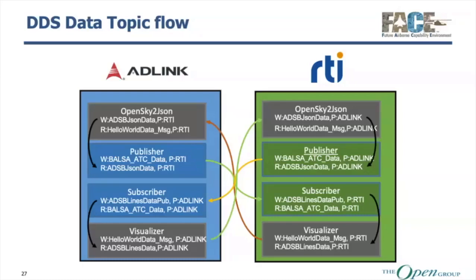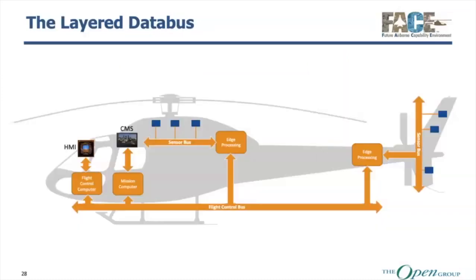One note about this visualizer: it's fully interactive. You can grab the screen and drag it to a new location, zoom in, zoom out. It actually sends data back to the OpenSky to JSON on the other side with a new set of coordinates, so it updates where on the map it's being visualized. This demo is actually pretty simple with just a few components, but DDS itself can handle much larger setups. It can be a small local network with interfaces to a bigger network, so it really scales well to large applications.